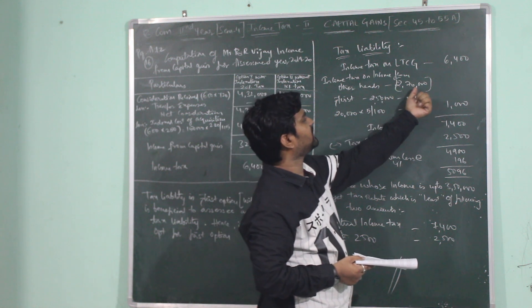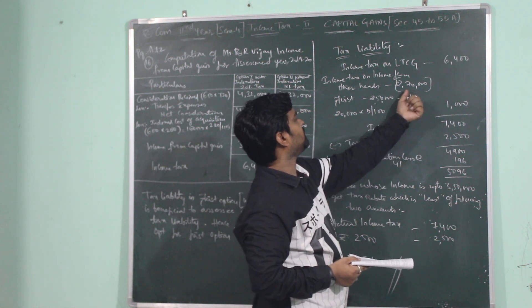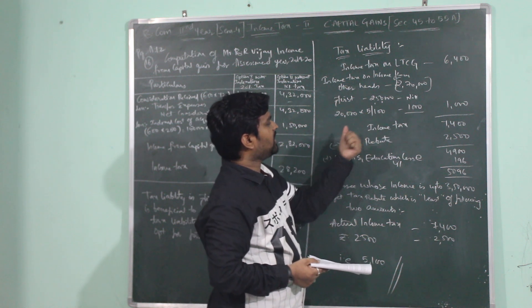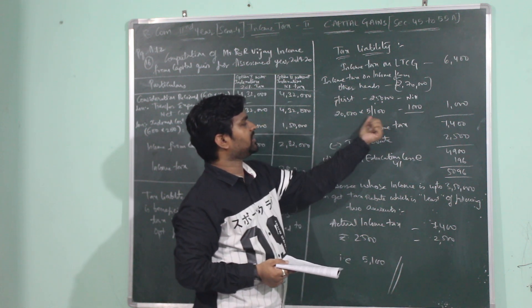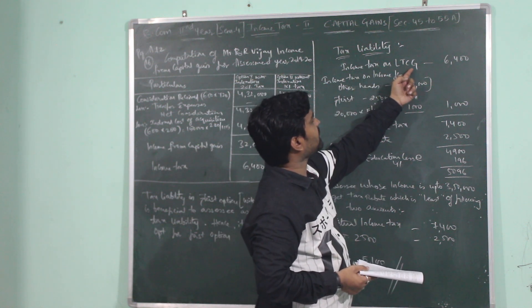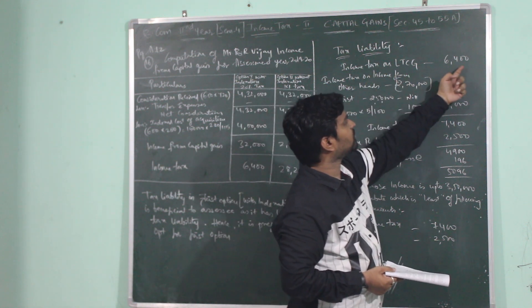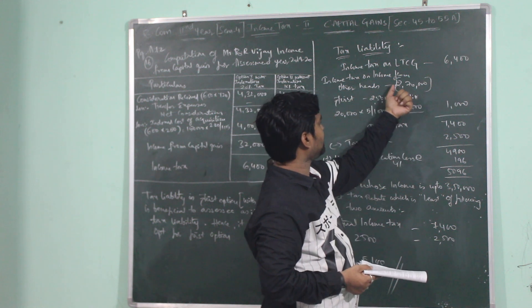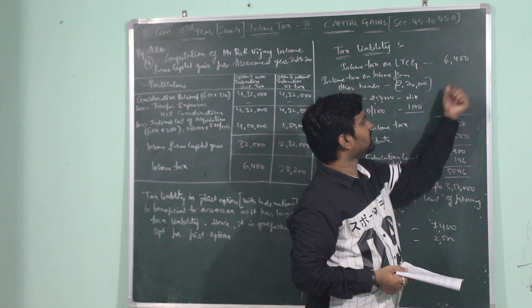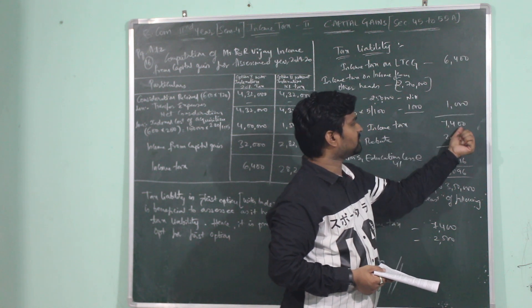Assessor's income is only 2,70,000, so only 20,000 difference amount will be taxed. 20,000 into 5 divided by 100 which is 1,000. So income tax on long-term capital gain is 6,400 and income tax on income from other heads is 1,000. Total income tax is 6,400 plus 1,000, which is 7,400.